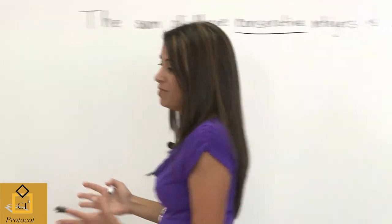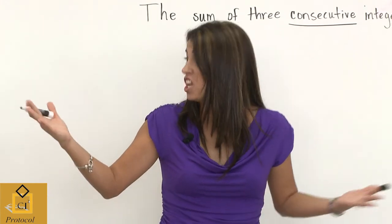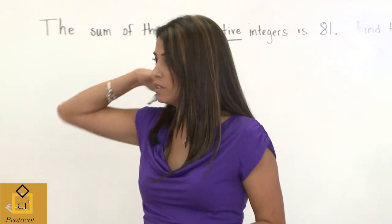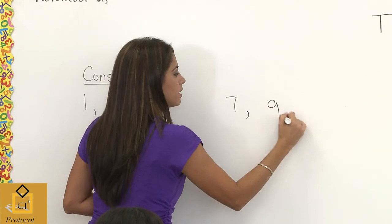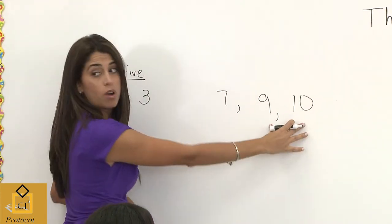Now give me an example, Chris Nell, of non-consecutive numbers. Let's say seven, nine, and ten. Seven, nine, and ten — they're not consecutive. Maybe nine and ten are, but not seven and nine.